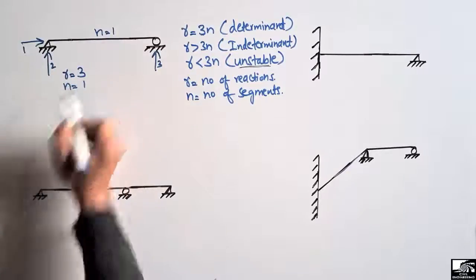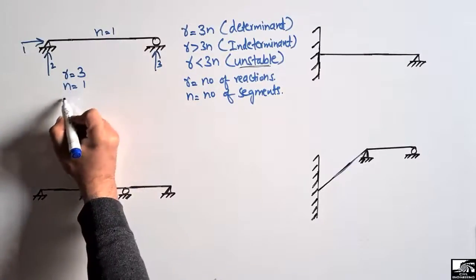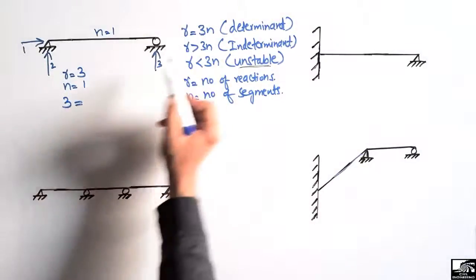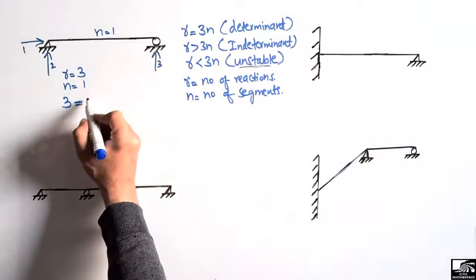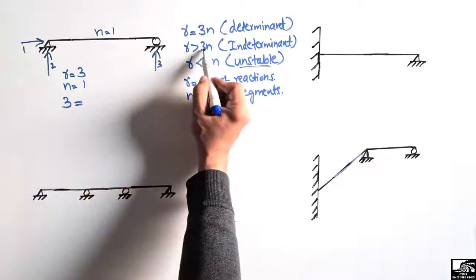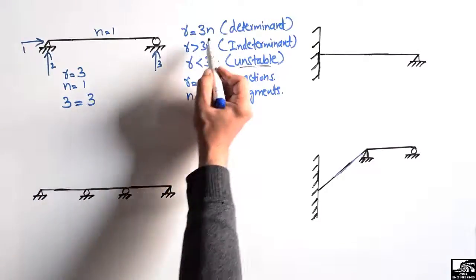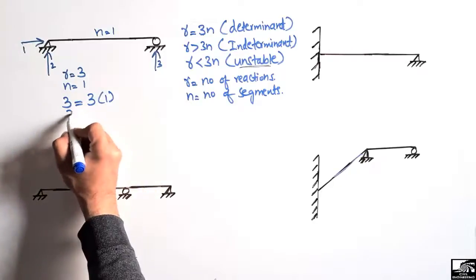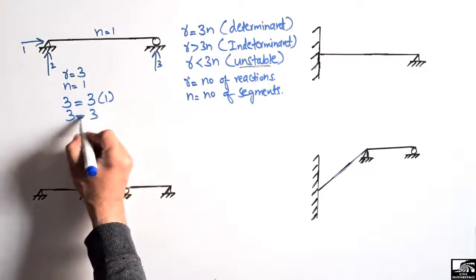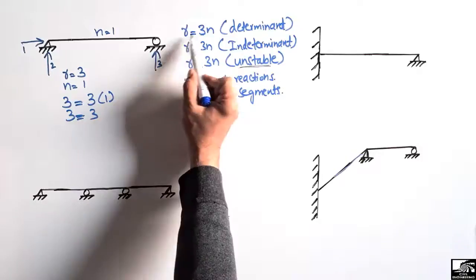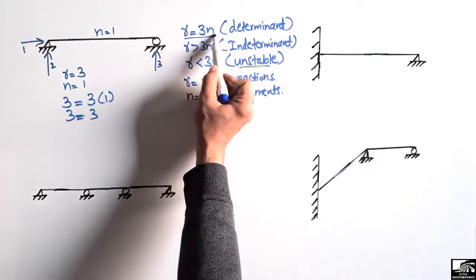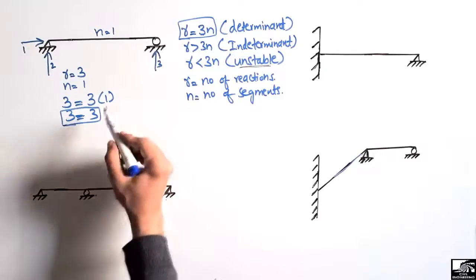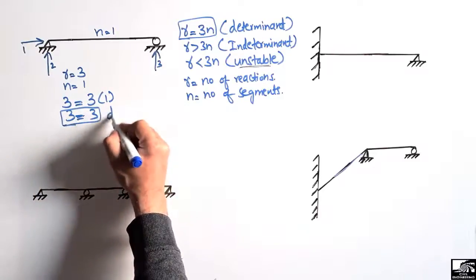We check: R equals 3 and 3n equals 3 times 1, which is also 3. Since R equals 3n, this beam is a determinant beam — it is stable and we can find the reactions using simple equilibrium equations.